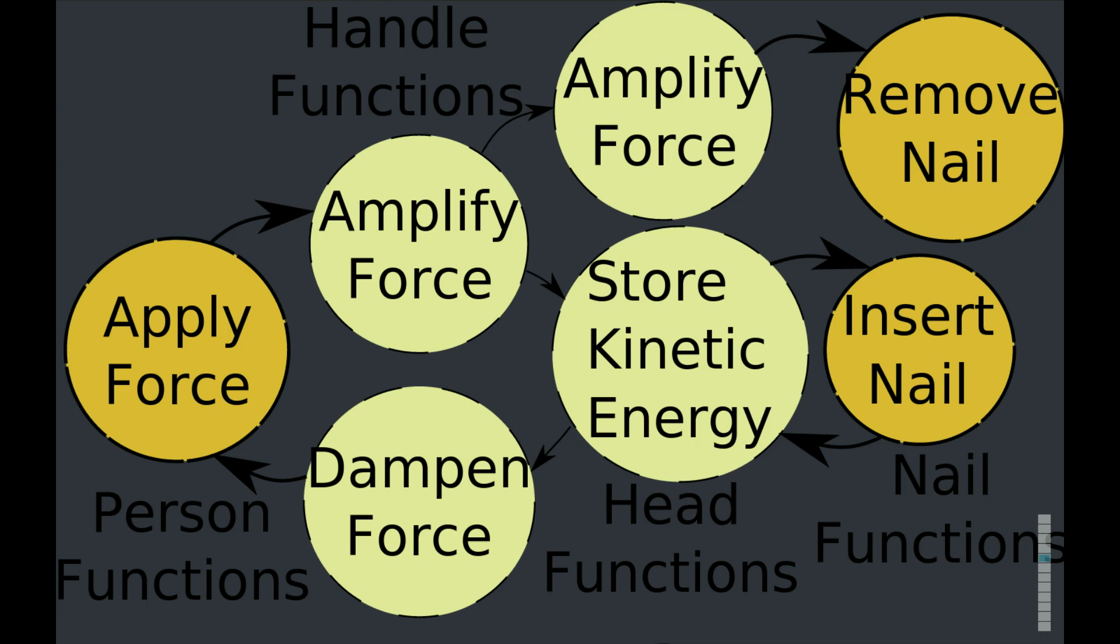The functions don't overlap subsystem boundaries. When a user wants to insert a nail, can you see the flow that happens?